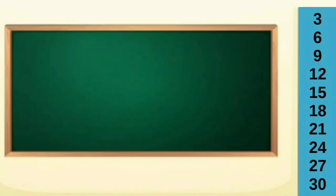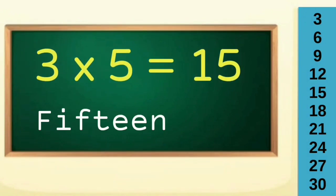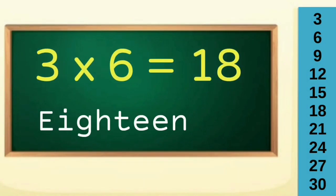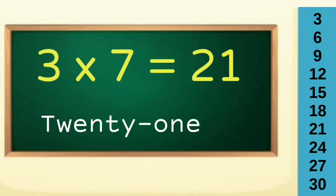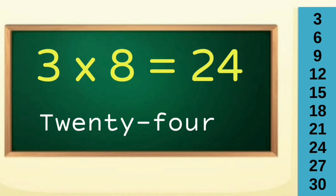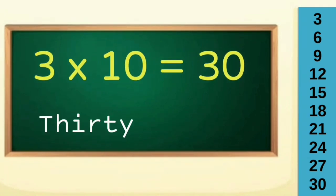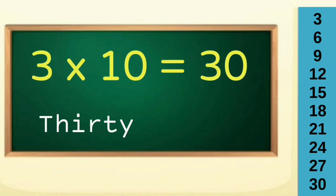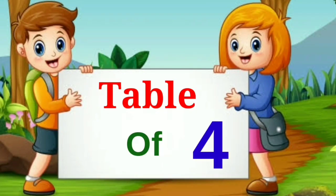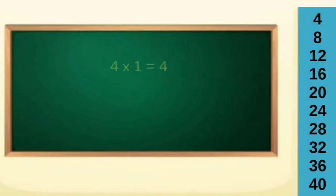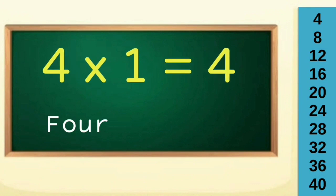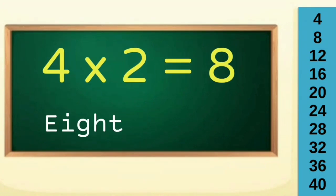Table of three: three ones are three, three twos are six, three threes are nine, three fours are twelve, three fives are fifteen, three sixes are eighteen, three sevens are twenty-one, three eights are twenty-four, three nines are twenty-seven, three tens are thirty.